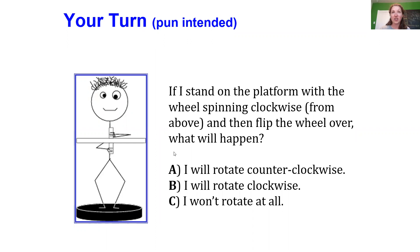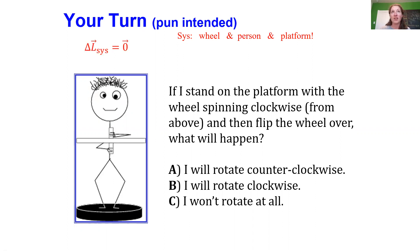To answer this question, we're going to use the fact that the angular momentum of this system stays constant. Our system here is the wheel, the person, and the platform. Since the angular momentum of the system doesn't change, the magnitude of the initial angular momentum equals the magnitude of the final angular momentum. But what's really important here is that the directions are also the same.